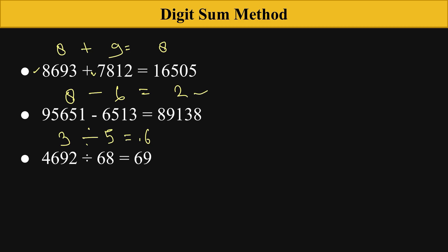For subtraction, the digit sum of this number is 2. The same will happen in division - the digit sums are 3, 5, and 6.